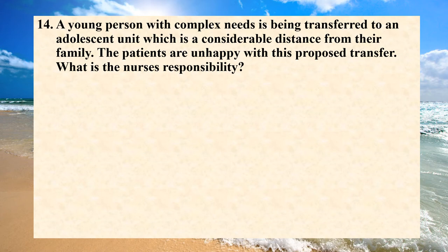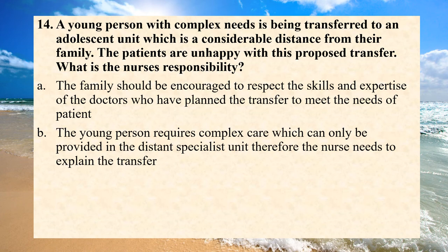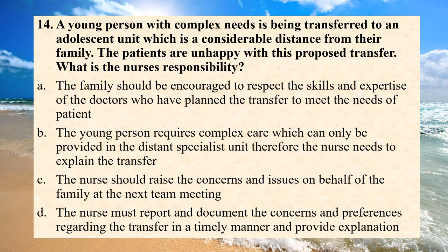A young person with complex needs is being transferred to an adolescent unit which is a considerable distance from their family. The patient's family is unhappy with the proposed transfer. What is the nurse's responsibility? A. The family should be encouraged to respect the skill and expertise of the doctors who planned the transfer to meet the needs of the patient. B. The young person requires complex care which can only be provided in the distant specialist unit; therefore the nurse needs to explain the transfer. C. The nurse should raise the concern on behalf of the family at the next team meeting. D. The nurse must report and document the concern and preference regarding the transfer in a timely manner and provide explanation. Answer is B. The young person requires complex care which can only be provided in the distant specialist unit; therefore the nurse needs to explain the transfer.